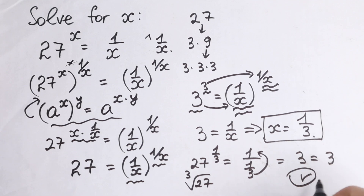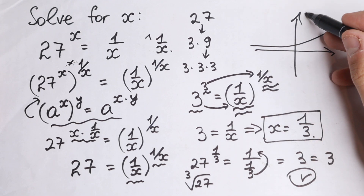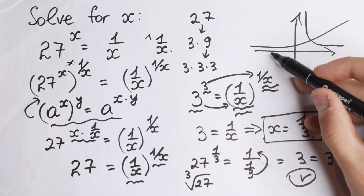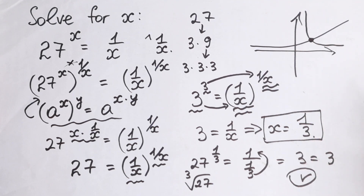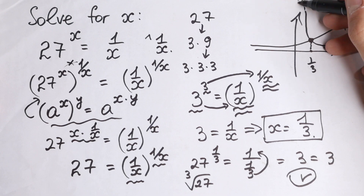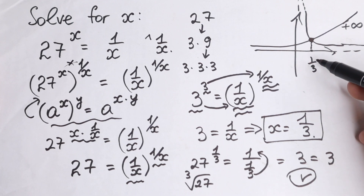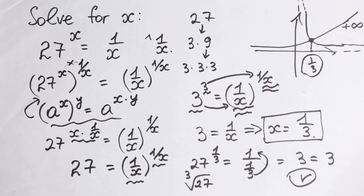Moreover, we can use the graph method. If we draw a quick graph, we have 27 to the power x, which is an increasing exponential function, and 1 over x. In the positive region, there is only one point of intersection, which confirms x equals 1 third. As x grows to infinity, the exponential grows to plus infinity, while 1 over x approaches the x-axis and the two functions do not intersect again. So this is the one and only real root.